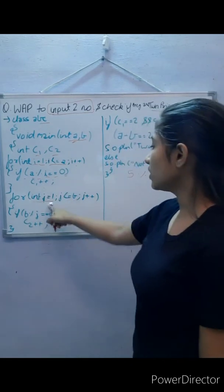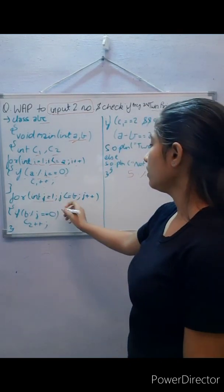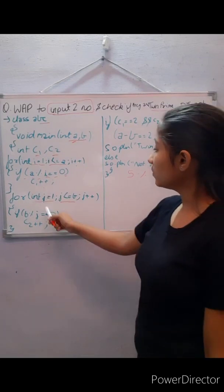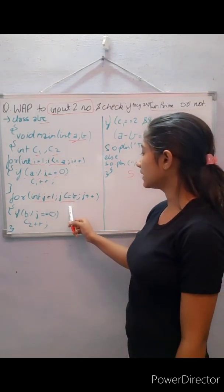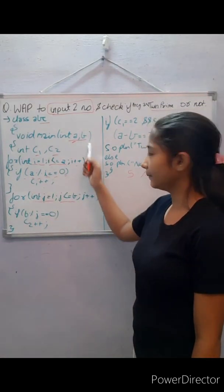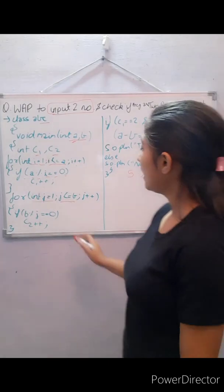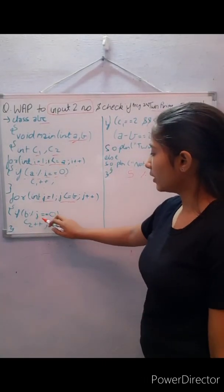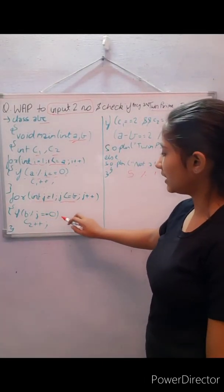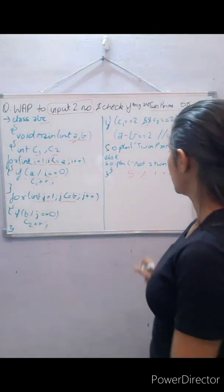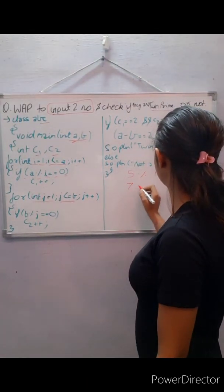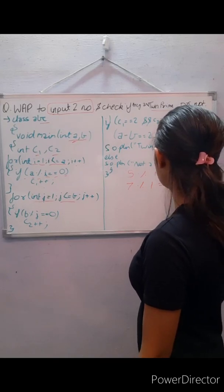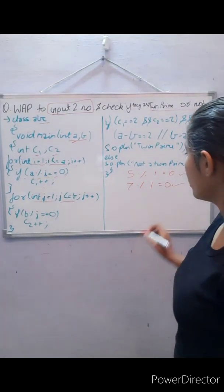In this loop: j is equal to one, j is less than or equal to b, j plus plus. This loop will run from one to the second number entered by the user. We apply the same condition: if b modulus j is equal to zero, we count that number — for example seven — incrementing c2 up to the number itself.